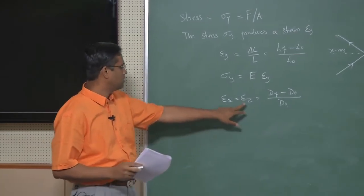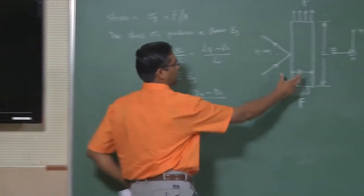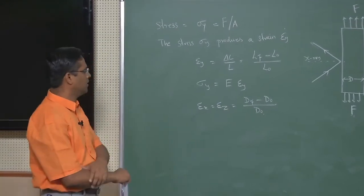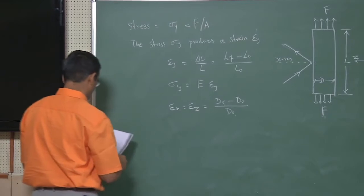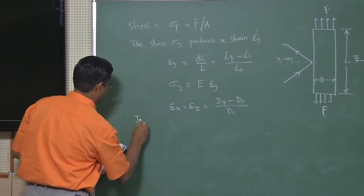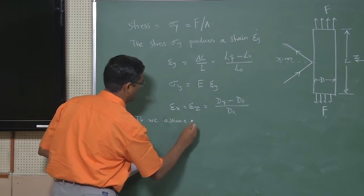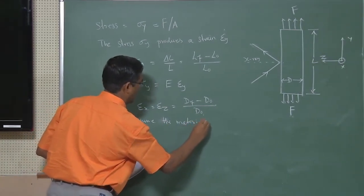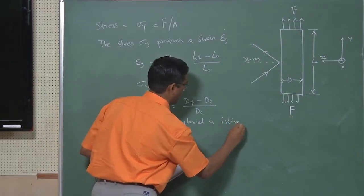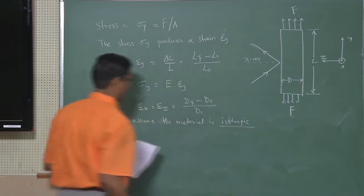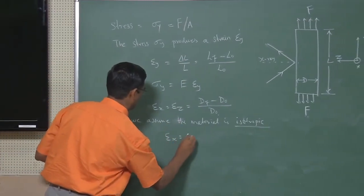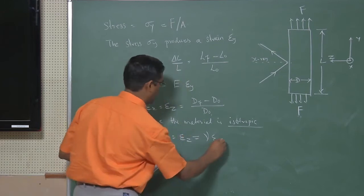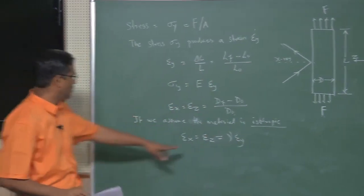This is the strain in the x direction. Strain in the z direction is measured by this change, D final minus D initial by D naught, which is the diameter of the sample. If we assume that the material is isotropic, then we can write epsilon x equals epsilon z equals mu times epsilon y. This is also true where mu is the Poisson's ratio.